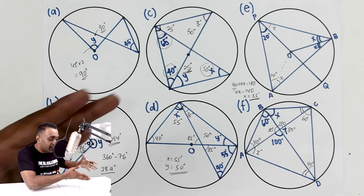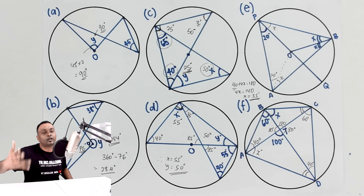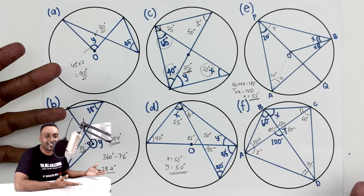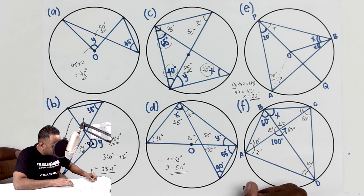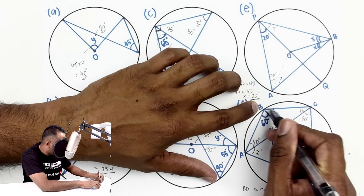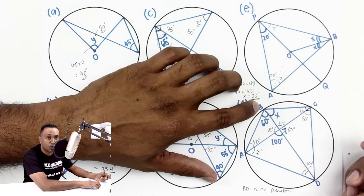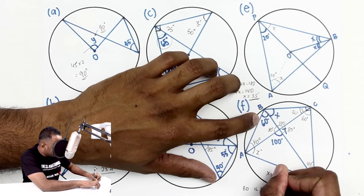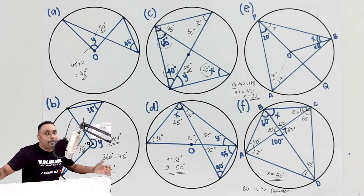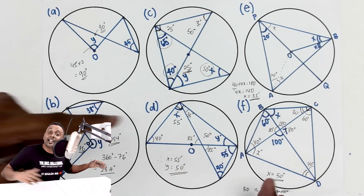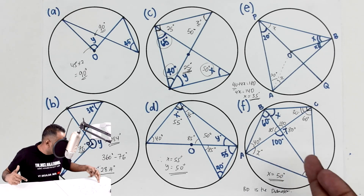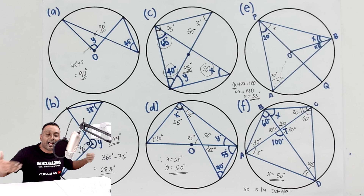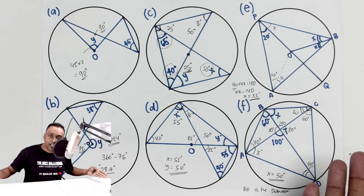After thinking carefully, I realize I missed an important piece of information: BD is the diameter. I apologize for that! If BD is the diameter, then any triangle formed from the diameter has a 90-degree angle. So this angle is 90°, giving us 60 + 30 = 90. Then 100 + 30 = 130, so X = 180 − 130 = 50 degrees. We used all our knowledge to recall and find all the angles.